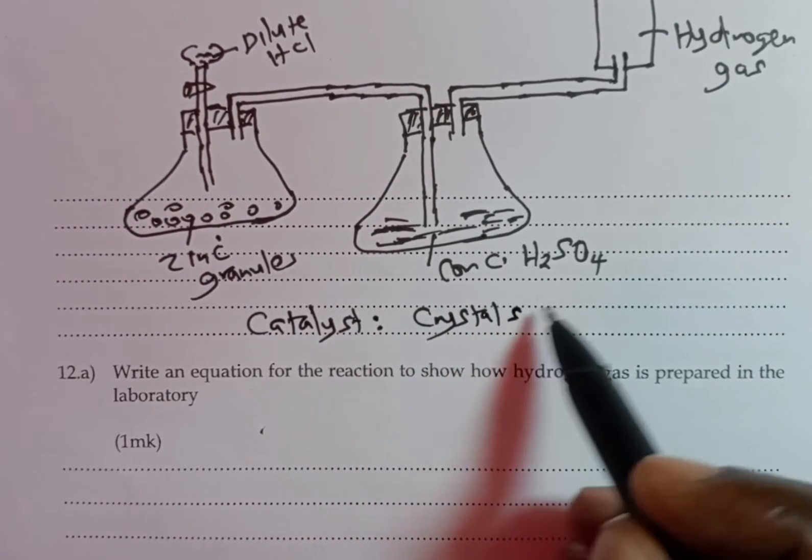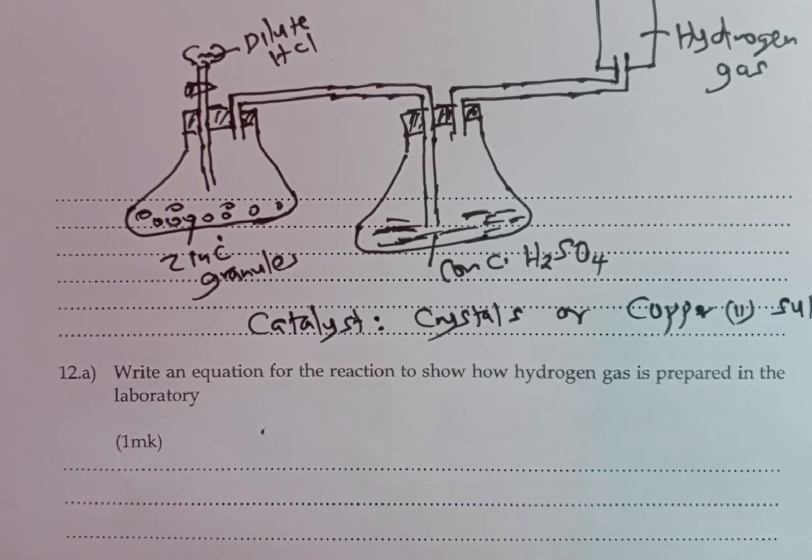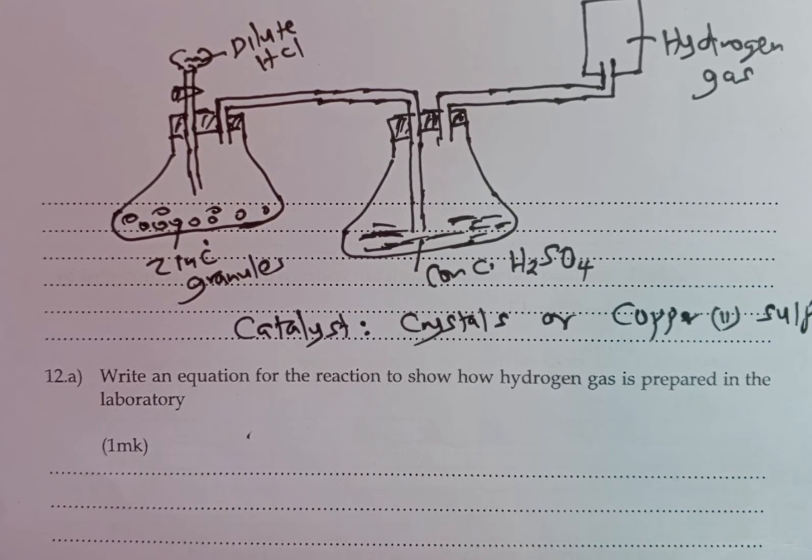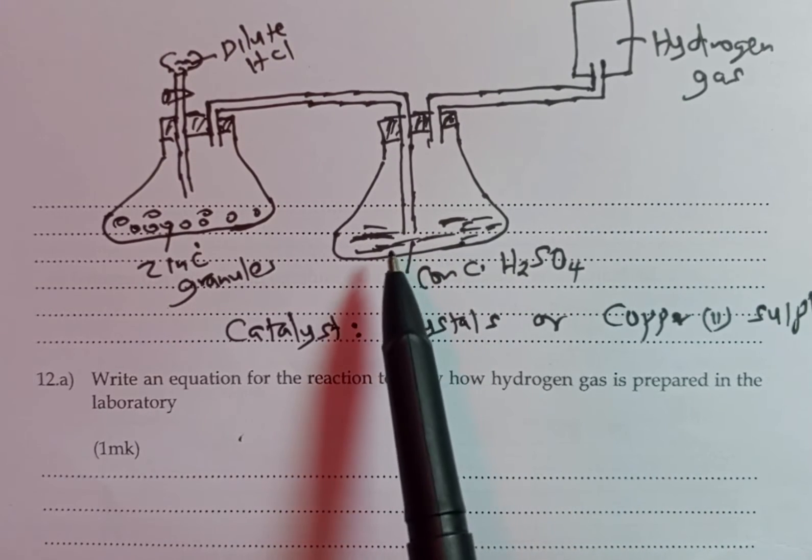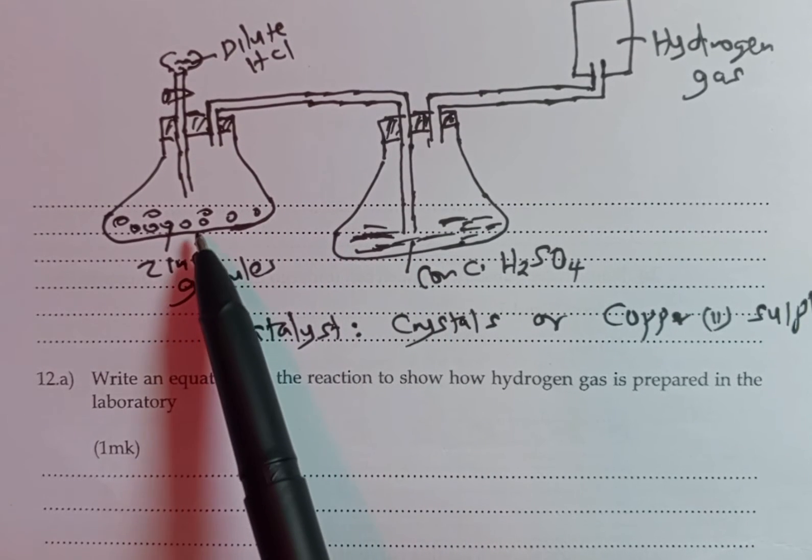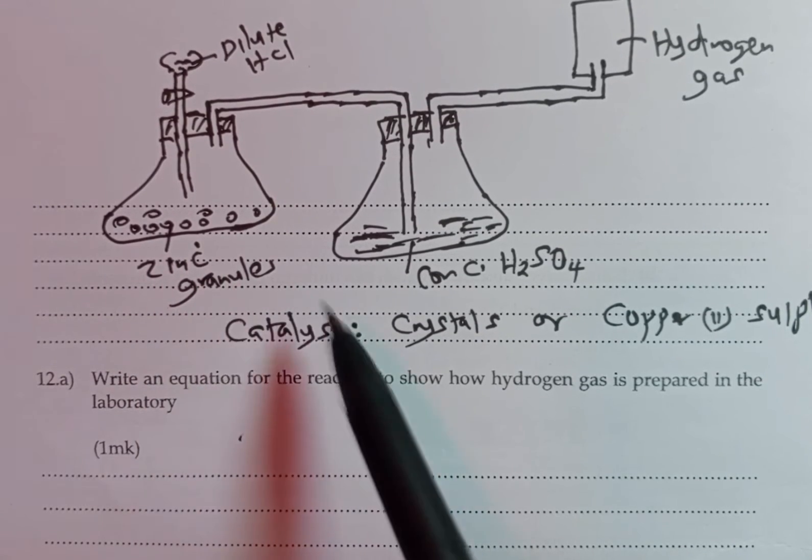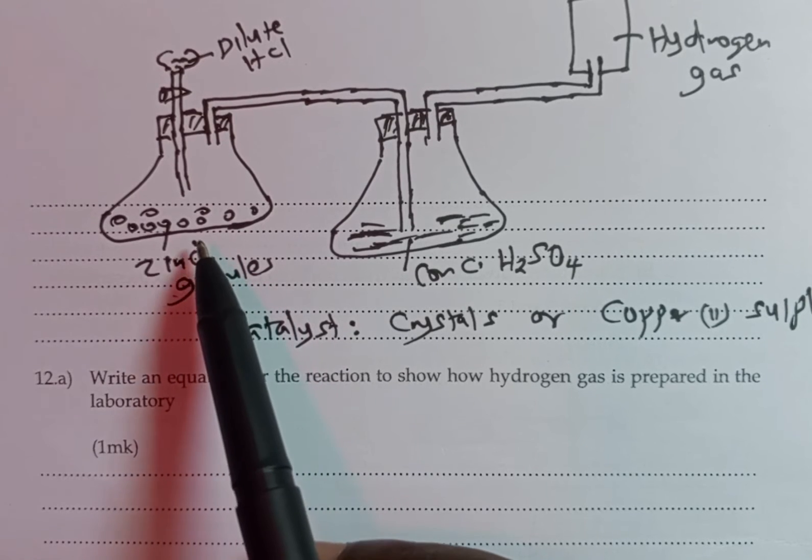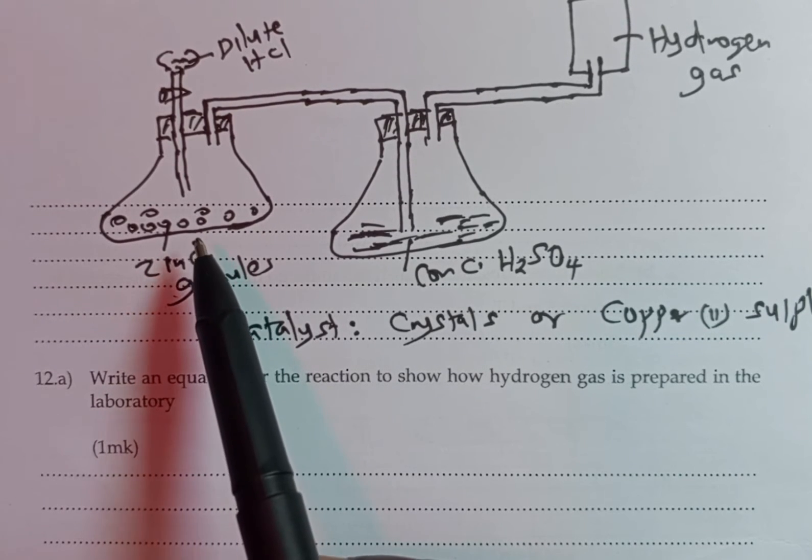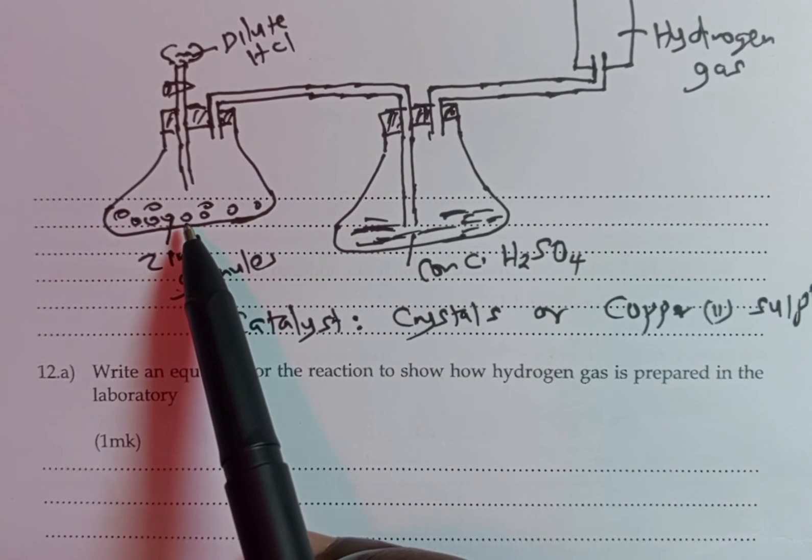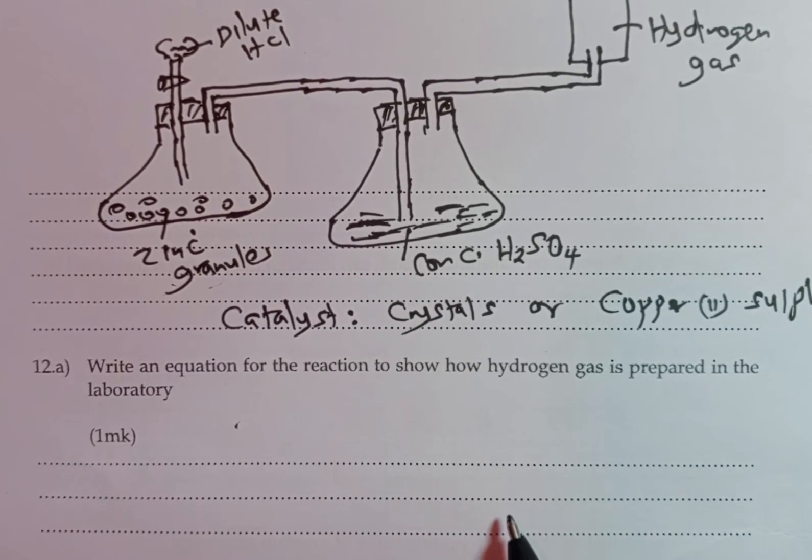We now move to the questions. But before we look at other questions, you can be asked about other metals that can be used to prepare hydrogen gas. Apart from zinc, we can use magnesium metal, but as we have said, it's expensive. We cannot use sodium and potassium because those two metals react explosively with dilute acids. Also, we can't use metals like copper and silver because they are below hydrogen in the reactivity series and therefore cannot displace hydrogen from these acids.